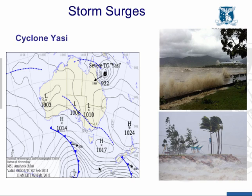In shallow water, storm surge can be particularly significant. For example, when Cyclone Yazzie hit northeastern Australia in 2011, it passed over the Great Barrier Reef, which is shallow water. And so the storm surge was particularly severe, and we had increased water levels along the coastline.